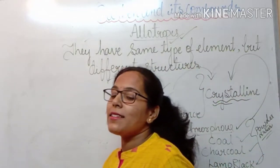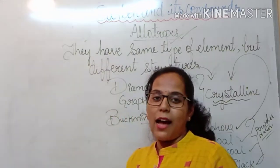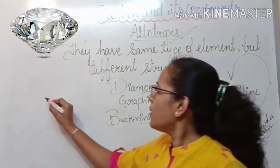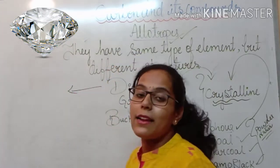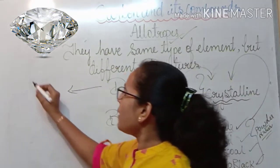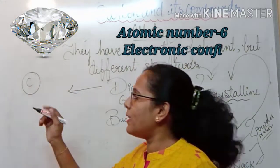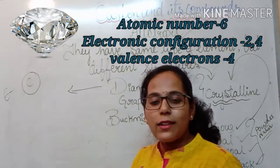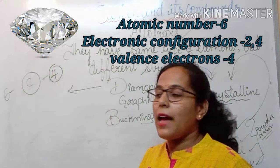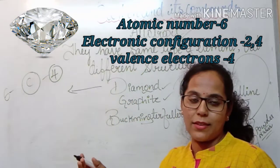So now let us start discussing each type of carbon, their arrangement of atoms, and their conductivity. We will start with the diamond. When I talk about diamond, let us first talk about the arrangement of atoms. You know that diamond is made up of carbon. The atomic number of carbon is 6, and its valency is 4. As carbon has a valency of 4, it can bond with 4 other carbon atoms.